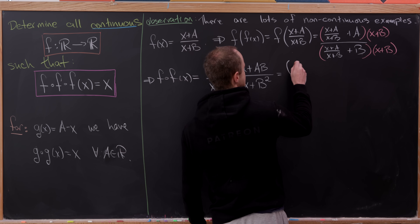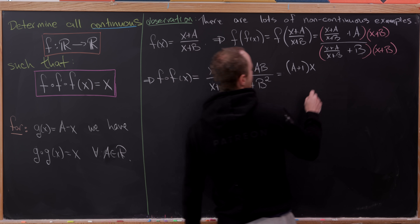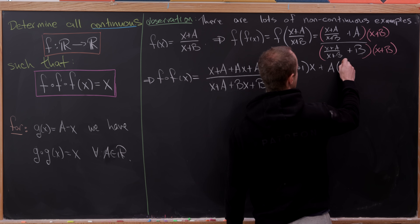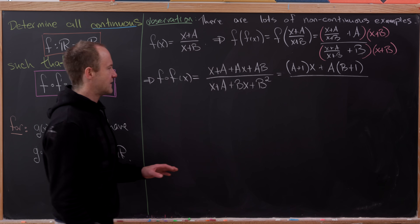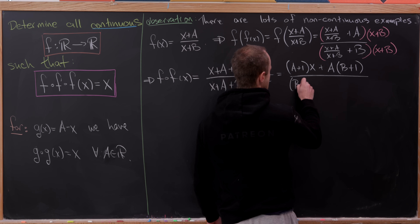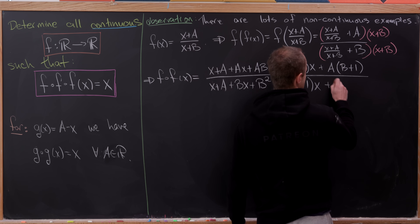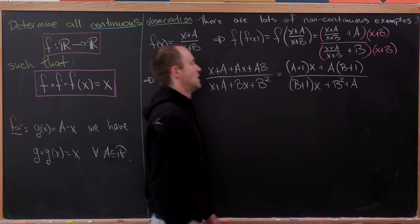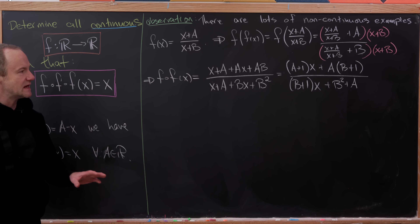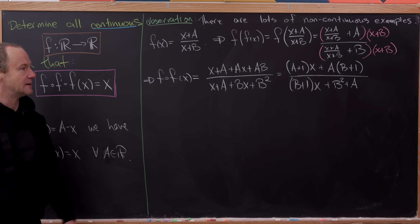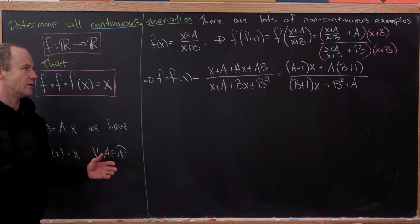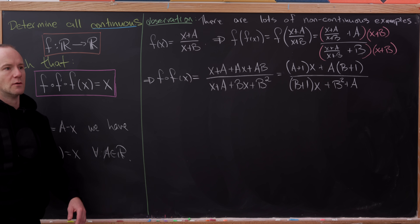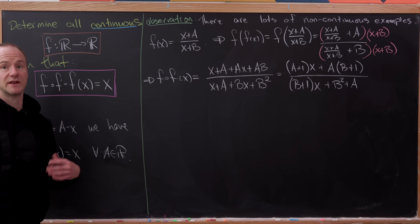So the two-fold composition simplifies to [(A+1)x + A(B+1)] / [(B+1)x + (B² + A)]. It's definitely possible to tweak the values of A and B so that this is already the identity function — I'm not going to do that here — but that would give you another infinite family of so-called involutions, functions that two-fold compose to the identity.